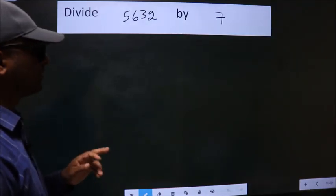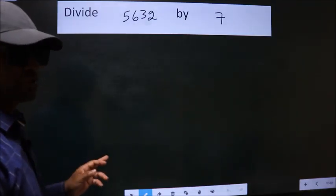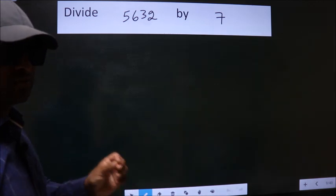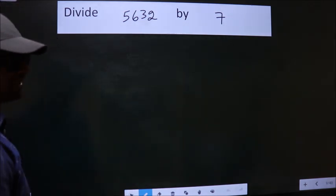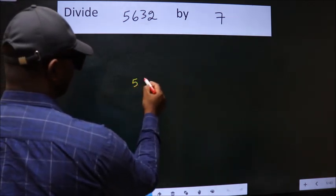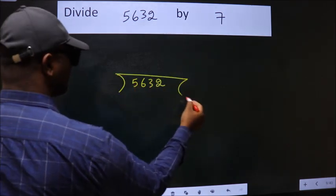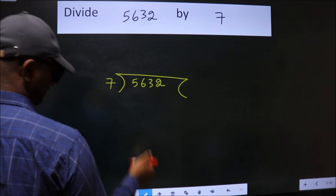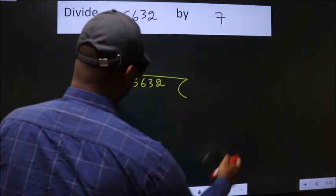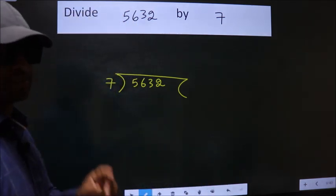Divide 5632 by 7. To do this division, we should frame it in this way. 5632 here, 7 here. This is your step 1.